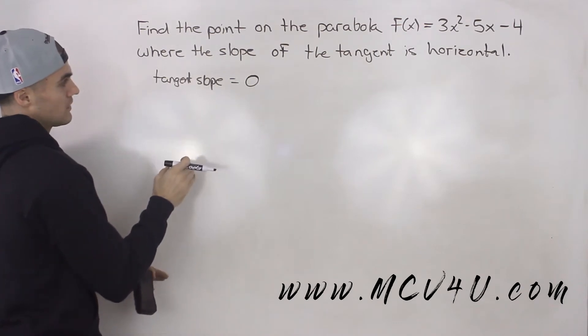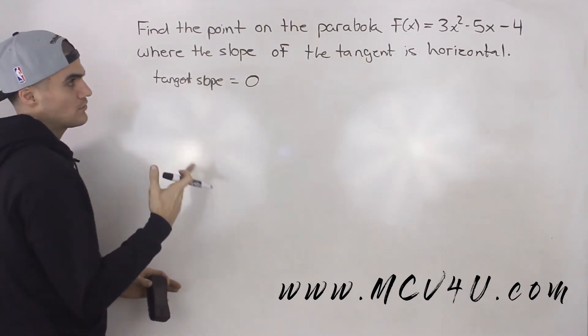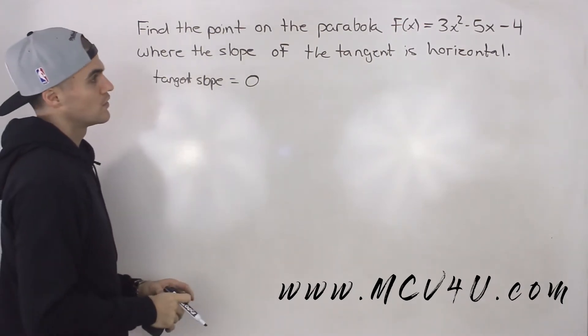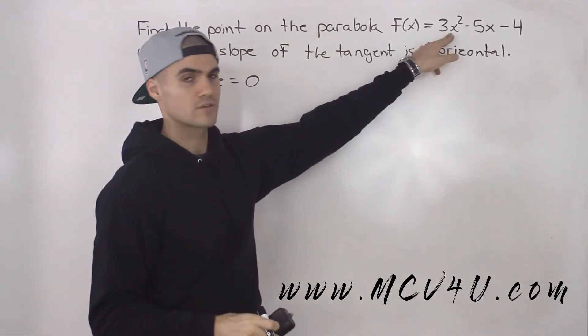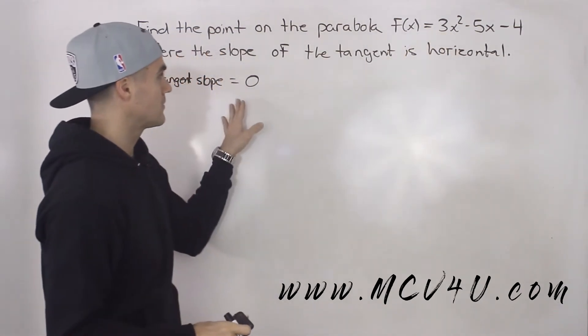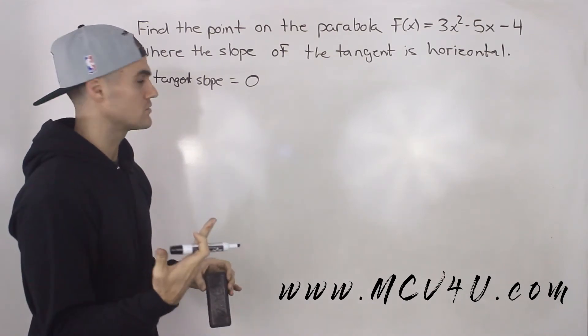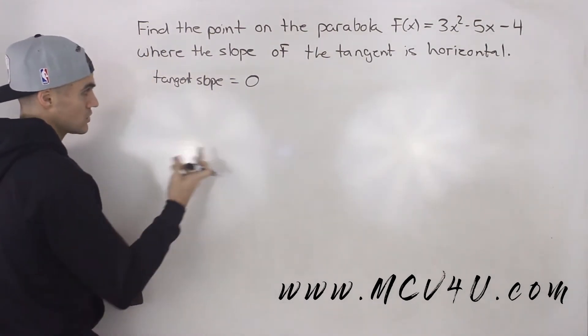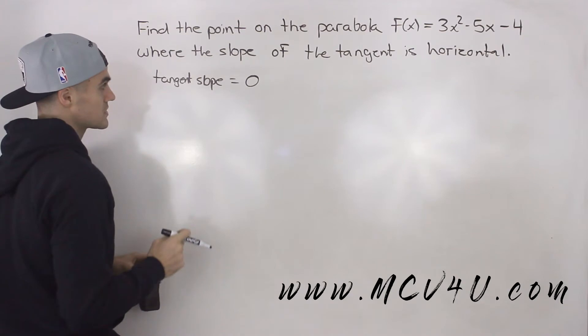So what we have to do is find a general expression for the slope of the tangent for this function, and then we have to make it equal to 0 and see at what x values that tangent slope is going to be 0.